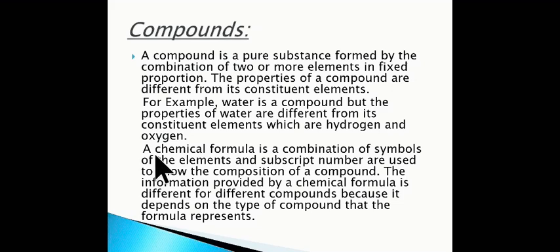What do you mean by chemical formula? A chemical formula is a combination of symbols of the elements, and subscript numbers are used to show the composition of a compound. The information provided by a chemical formula is different for different compounds because it depends on the type of compound that the formula represents.